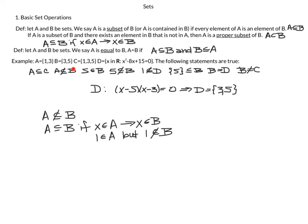Next statement: A is not contained in B. If A were contained in B, that would imply every element X in A is also in B. But 1 is an element of A, and 1 is not an element of B. So this condition is not met, and A is not contained in B.